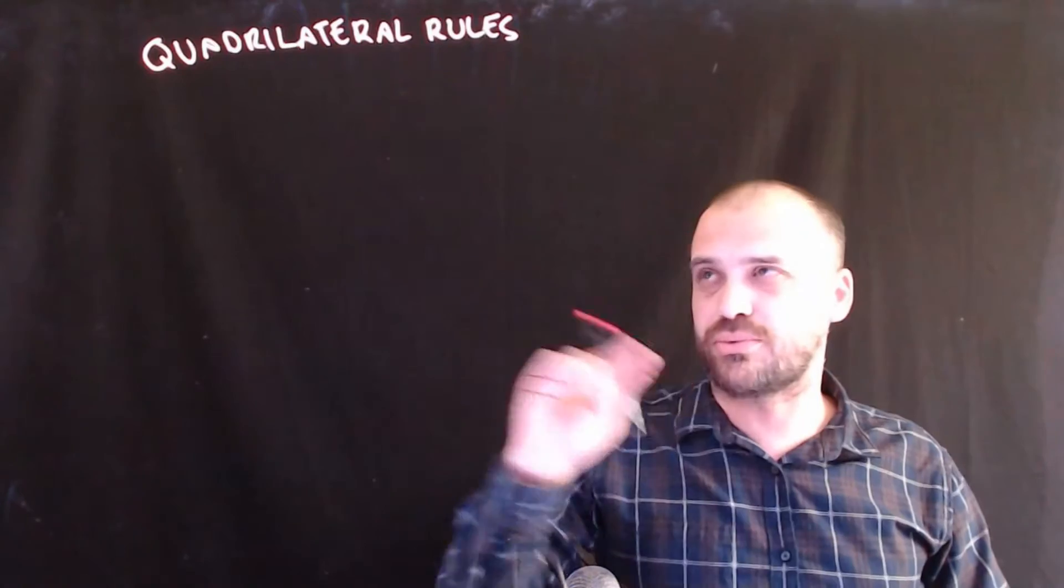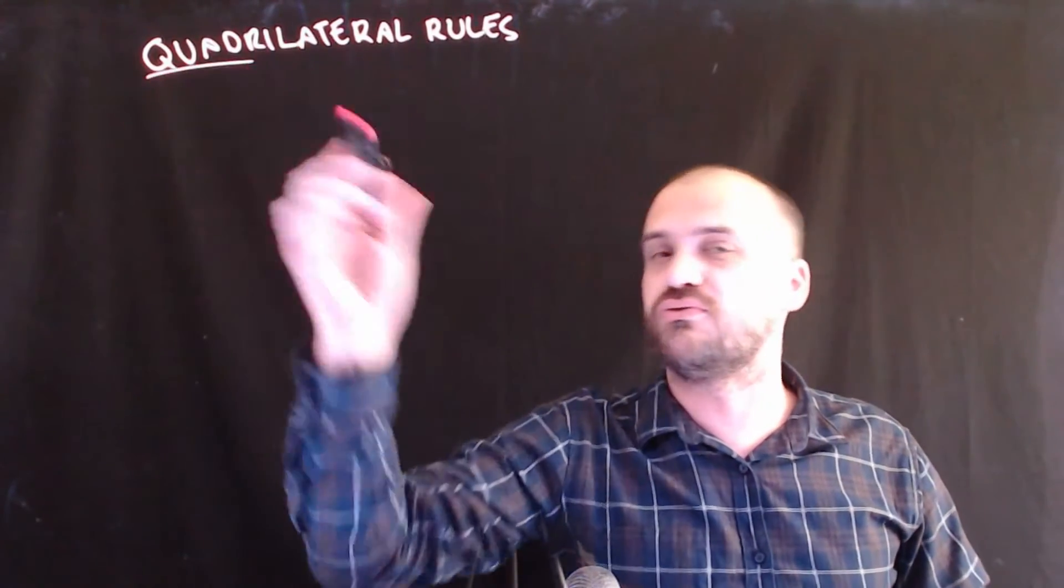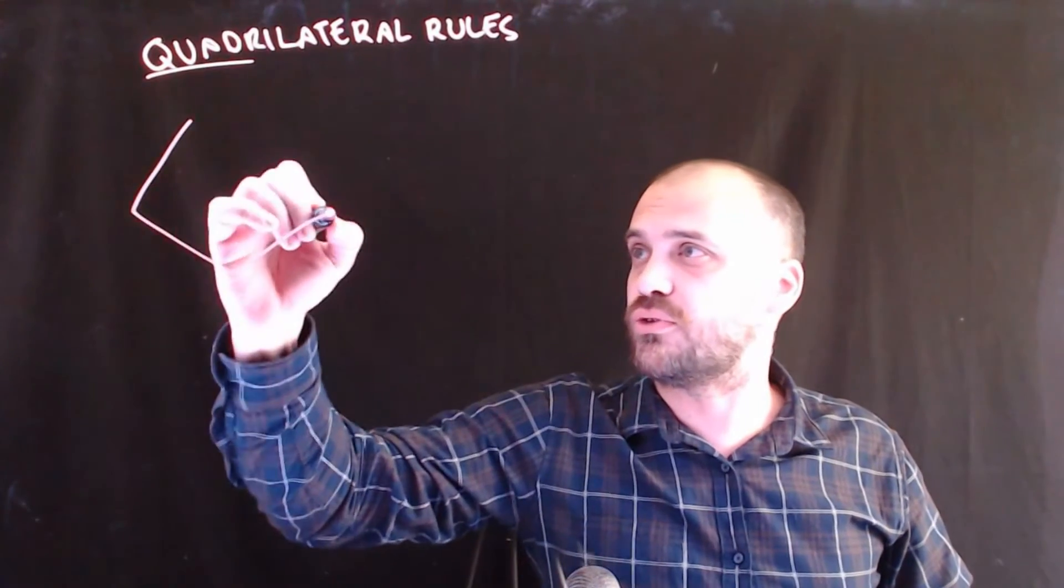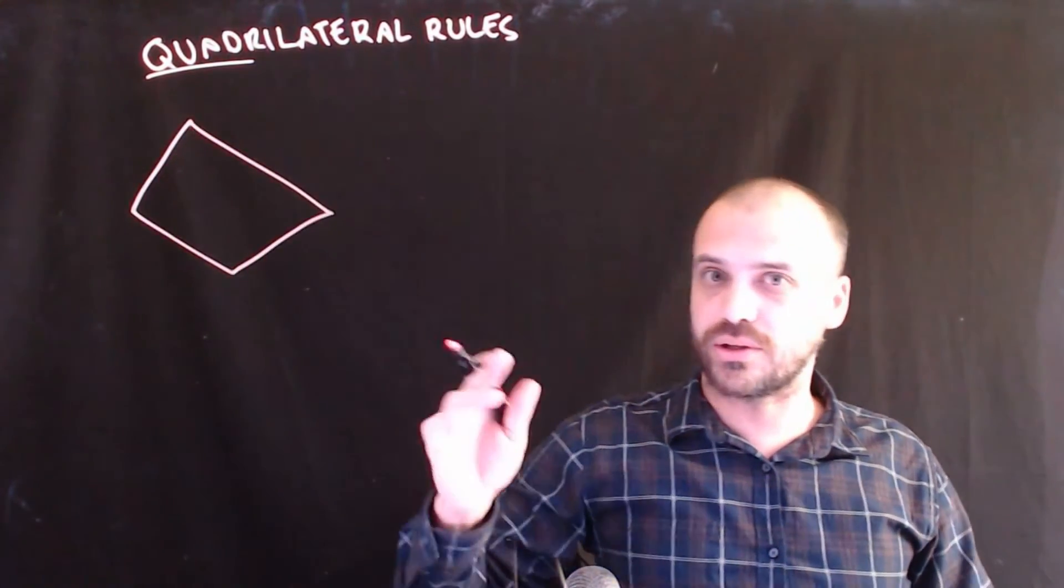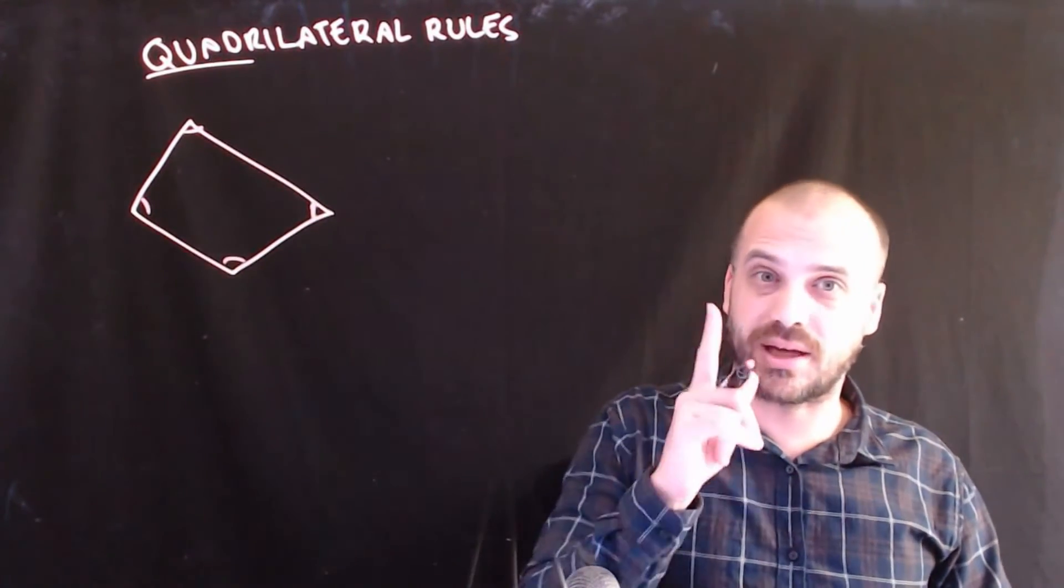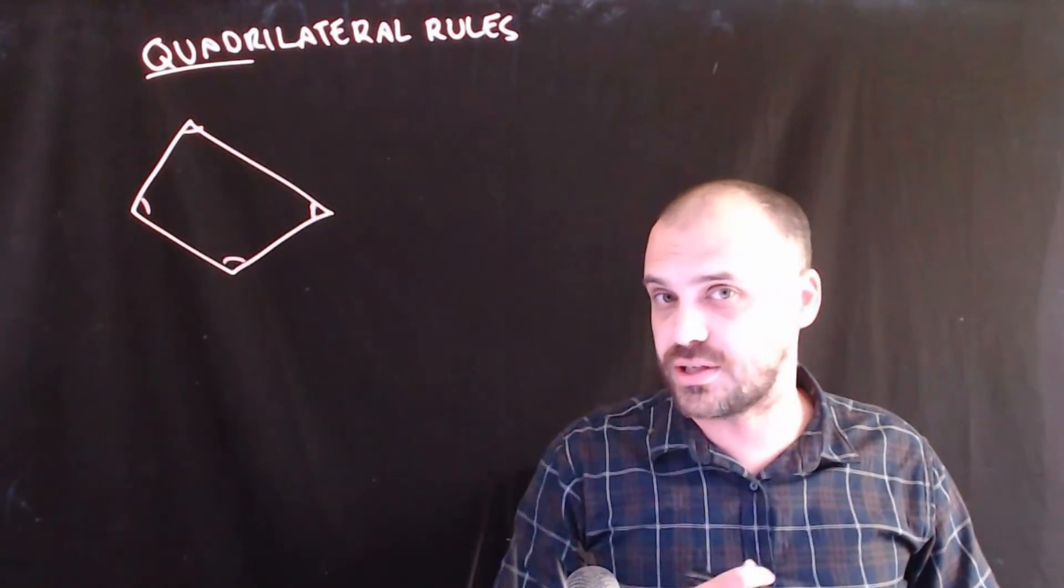So, quadrilateral rules, we're going to jump through this really quickly. Quad means four, so these are four-sided shapes. If you draw any four-sided shape, it doesn't matter what it looks like, the internal angles of that four-sided shape are going to add up to 360 degrees.